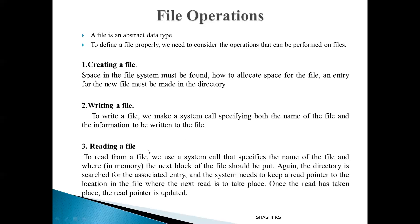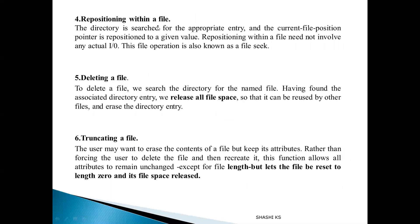The third operation is reading a file. A read system call is used, specifying the file name and where to put the block in memory. The directory entry is searched, and a read pointer contains the location for the next read; after each read, the pointer is updated. The fourth operation is repositioning a file — no input/output is carried out; the file pointer is simply repositioned to the location specified in the system call.